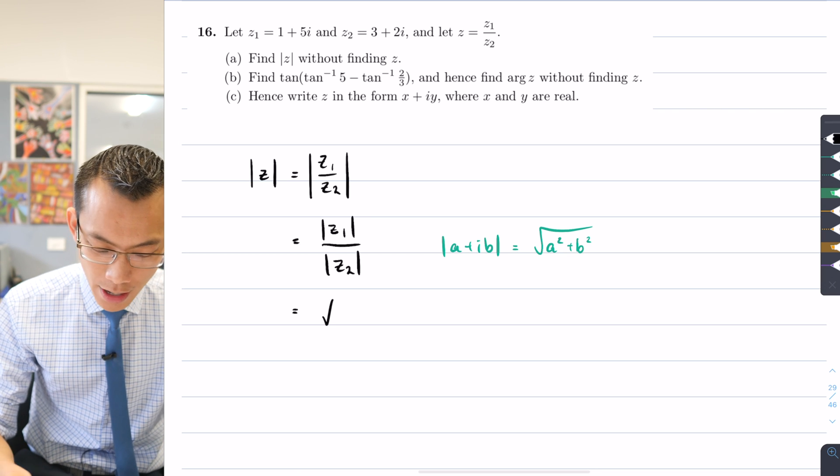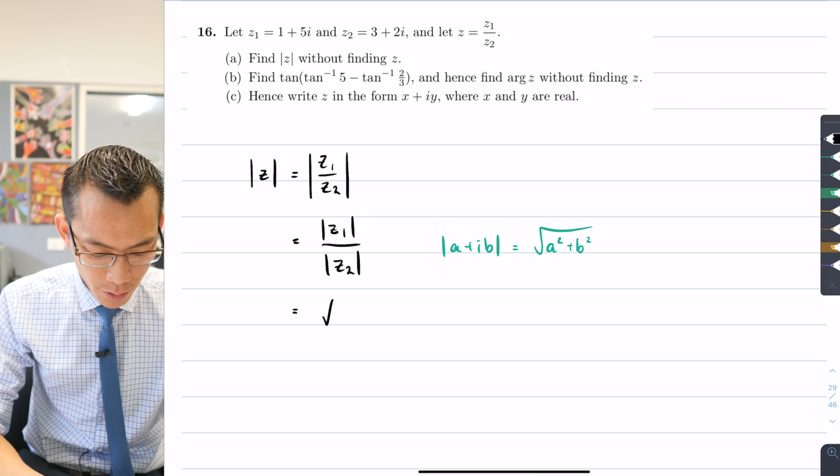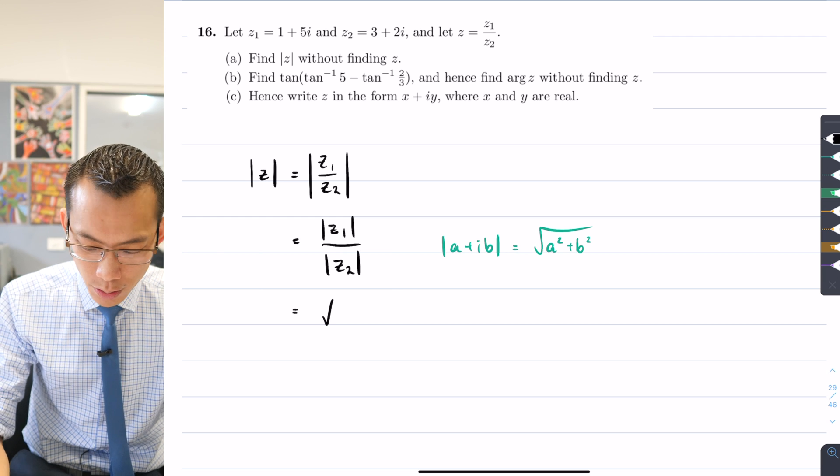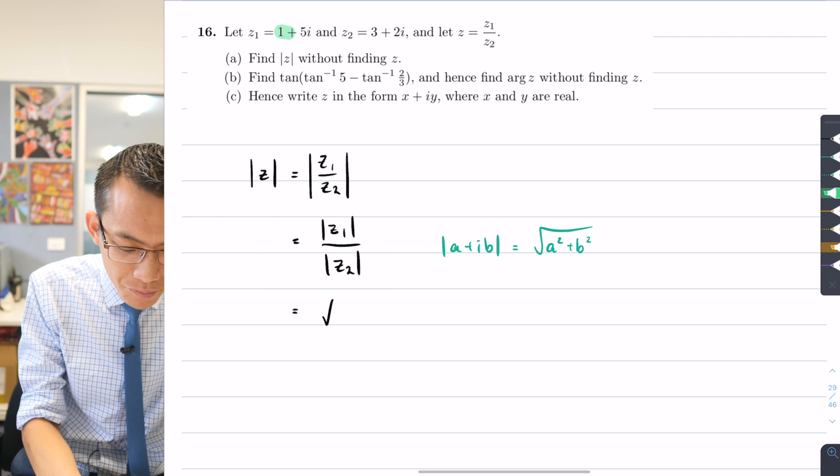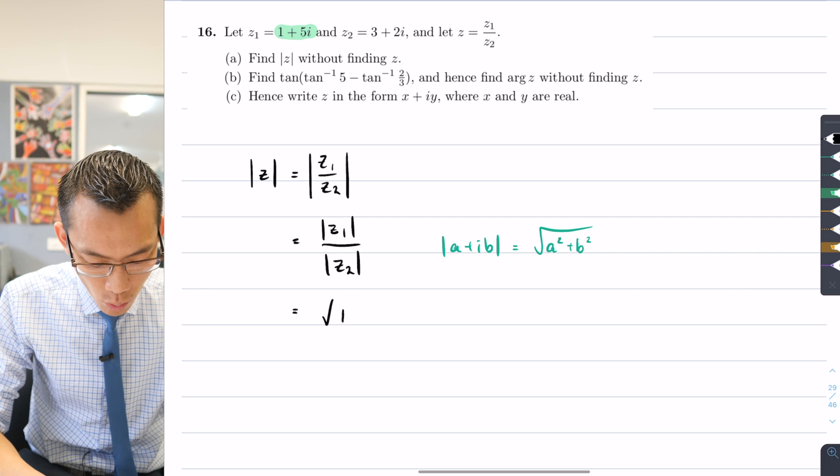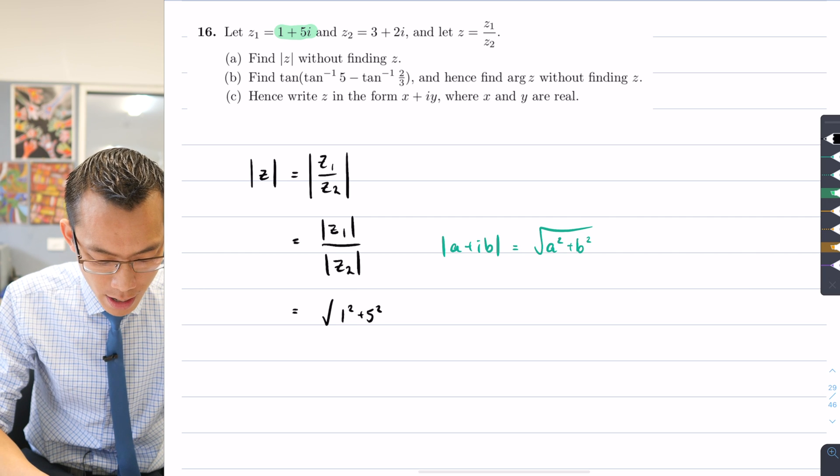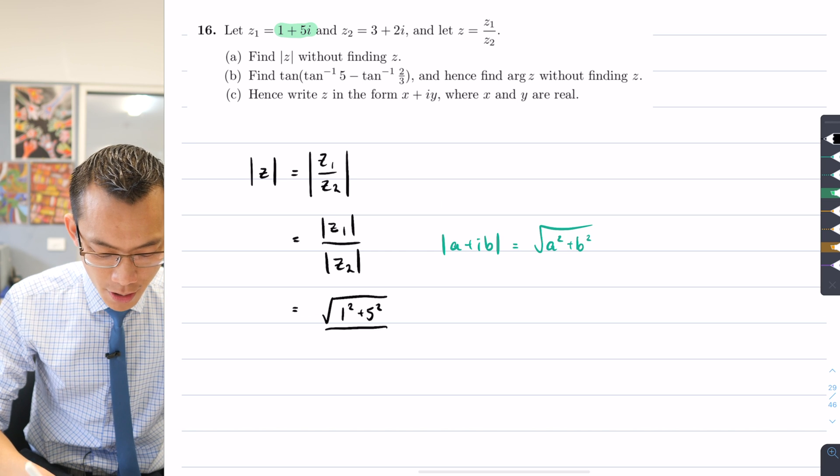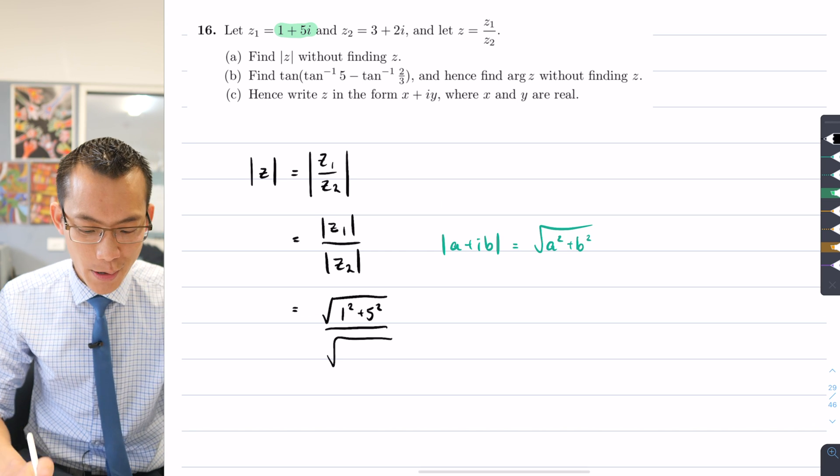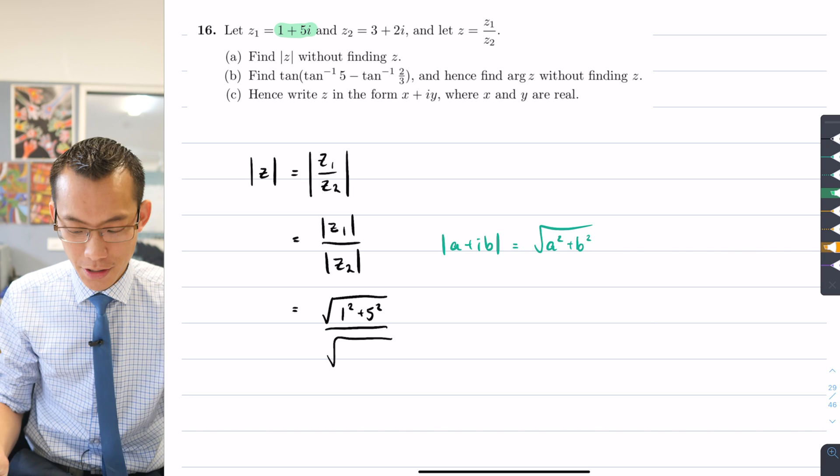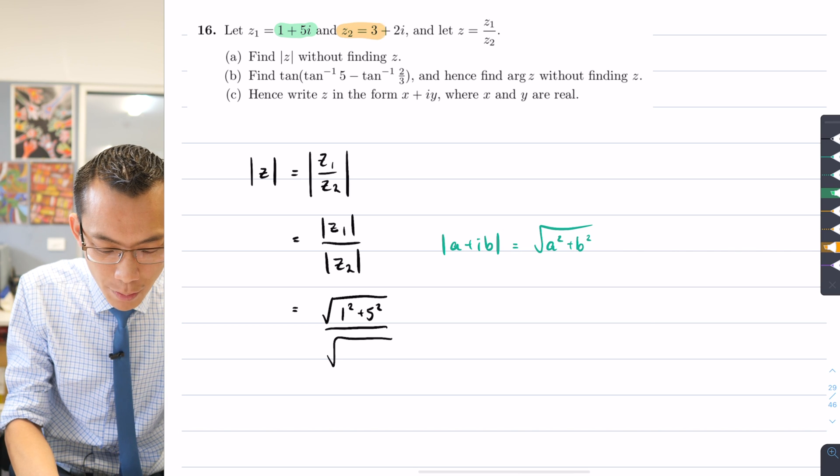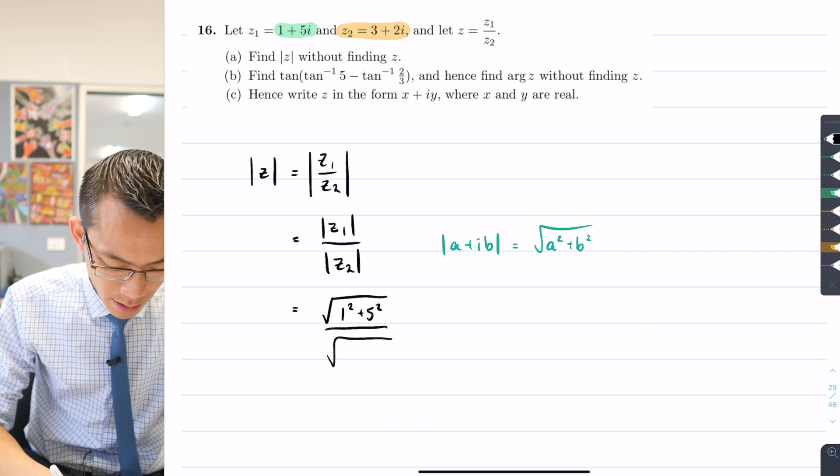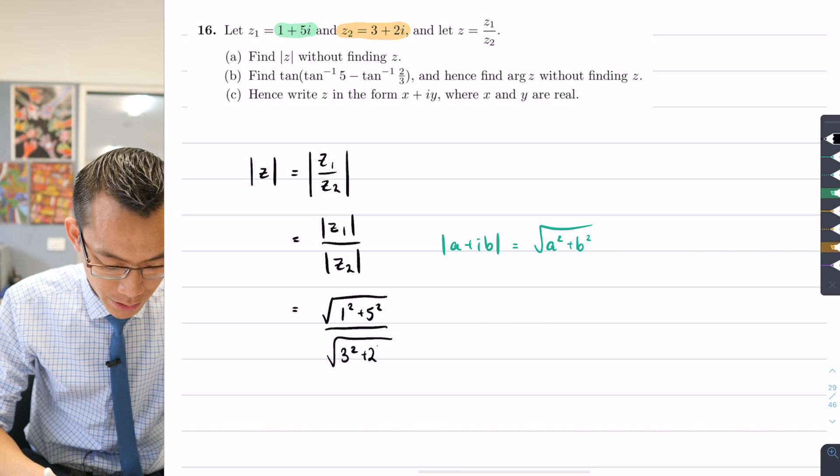On the numerator I'm going to have the square root of what are my coefficients here—they're going to be one and five, so I get one squared plus five squared underneath the square root. And then on the denominator, again I'm going to get a square root, this time my a and b will be three and two, so I get three squared plus two squared.